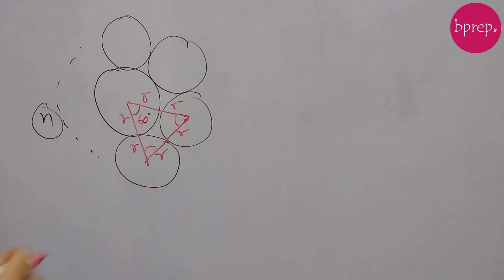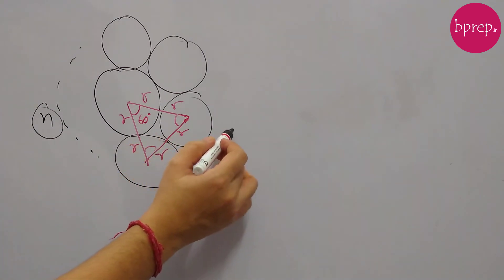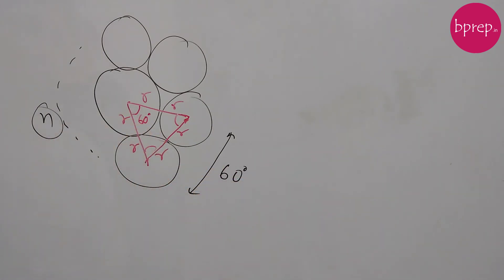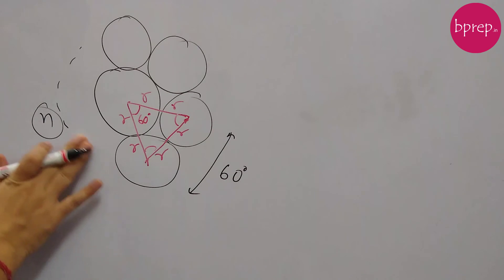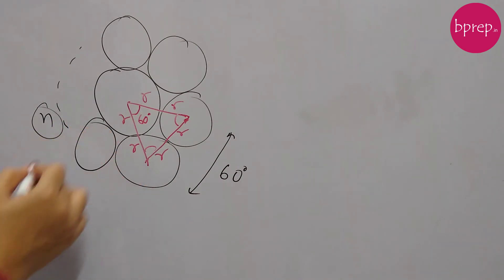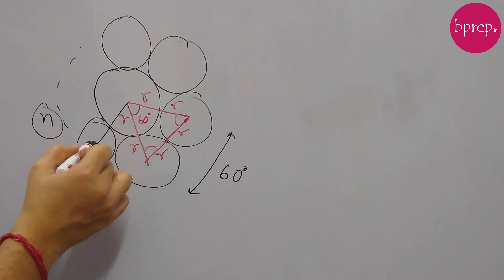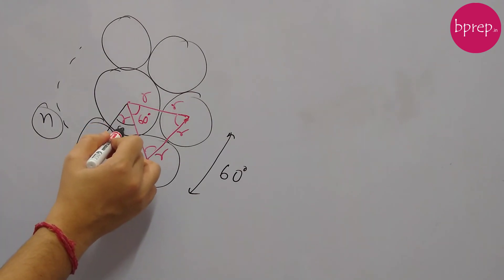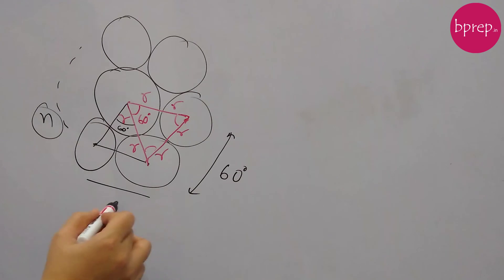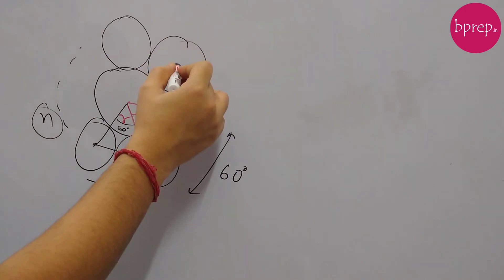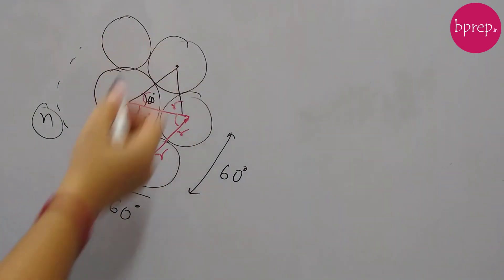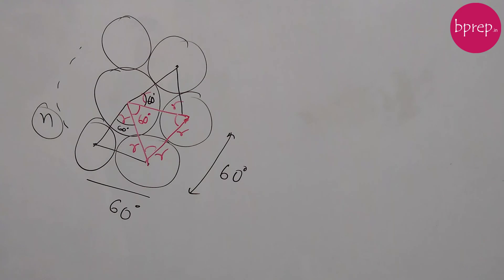So this angle will also be 60 degrees. These two coins are making an angle of 60 degrees at the center. Now if we add one more coin and again join the center of this coin to the center of the other coin, in a similar way this angle will again be 60 degrees. Same way, if we consider this coin and join the center, it will make an angle of 60 degrees. So every coin we add will make an angle of 60 degrees at the center.